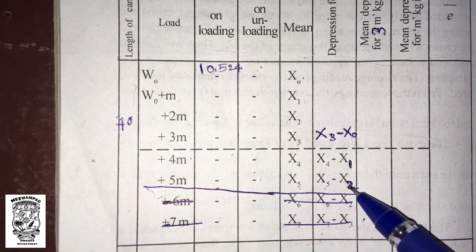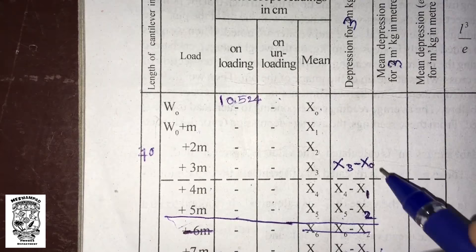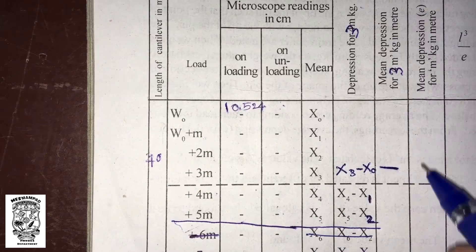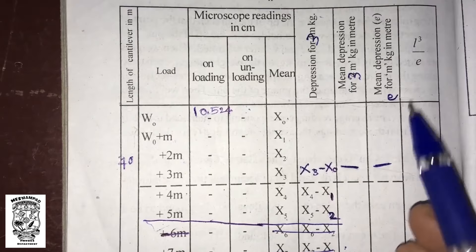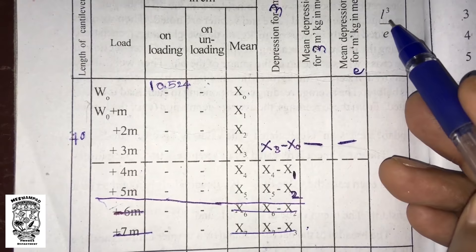Next, mean depression for 3M. These three readings give the mean, mean depression for 3M. Next, divided by 3, we will get the mean depression per M. So, this is the mean depression E. From this, we can calculate L cubed over E. L is 40 centimeters and E is here.